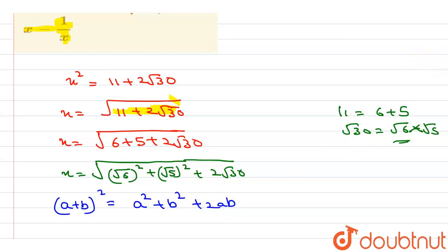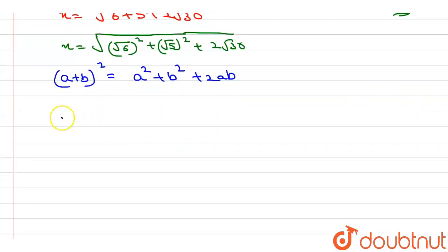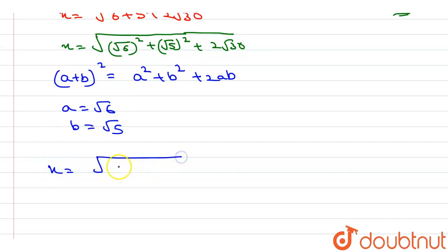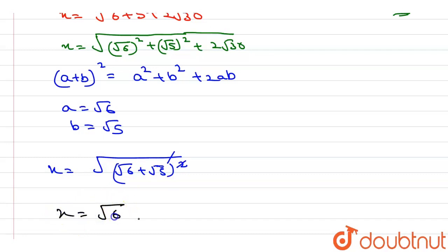So from here, with a equals root 6 and b equals root 5, we can write x equals under root of (root 6 plus root 5) whole square. The square root cancels out, so we get x equals root 6 plus root 5.